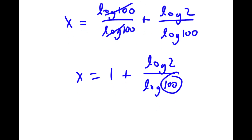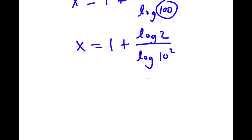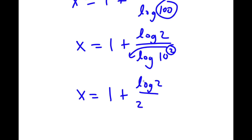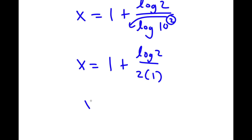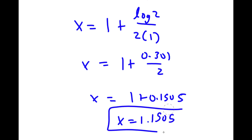Now 100 is the same thing as 10 squared, so I have x is equal to 1 plus log 2 over log of 10 squared. If I have something in the form log a to the power of b, I move b to the front. So now I have x is equal to 1 plus log 2 over 2 times log 10, and log 10 is simply 1. Log 2 equals 0.301 over 2, which is 0.1505, so x is equal to 1 plus 0.1505, which equals 1.1505.